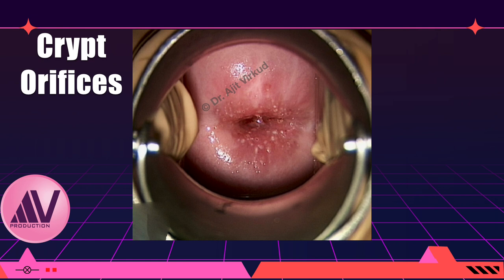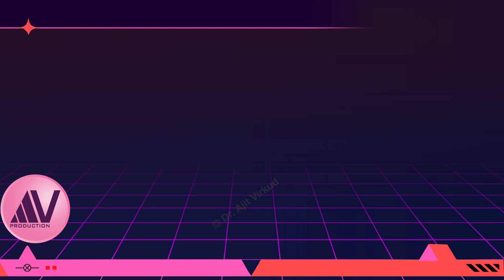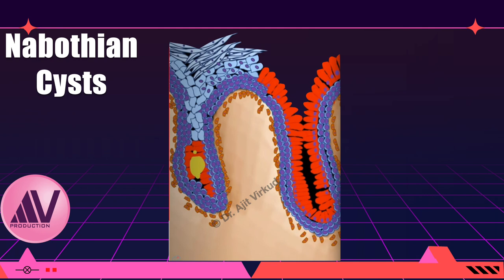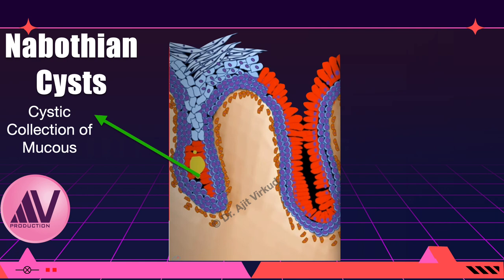The squamous metaplasia process leaves behind some tell-tale signs. The patchy metaplastic process fails to descend into the endocervical crypts; therefore, the fine glandular orifices of the crypts remain visible in some places. During squamous metaplasia, in some areas the newly formed squamous cells cover the functional columnar cells that produce mucus. This causes the underlying cervical crypts — the so-called cervical glands — to be blocked. They continue to produce mucus, but these secretions accumulate in situ as they have no drainage. This accumulation is called a Nabothian cyst.